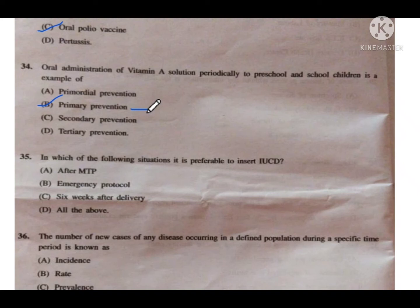Quarantine also falls under primary prevention. For secondary prevention, if a child has chickenpox and is isolated, that is secondary prevention — post-exposure isolation. Hand washing, regular exercise, and healthy diet are examples of primary prevention.